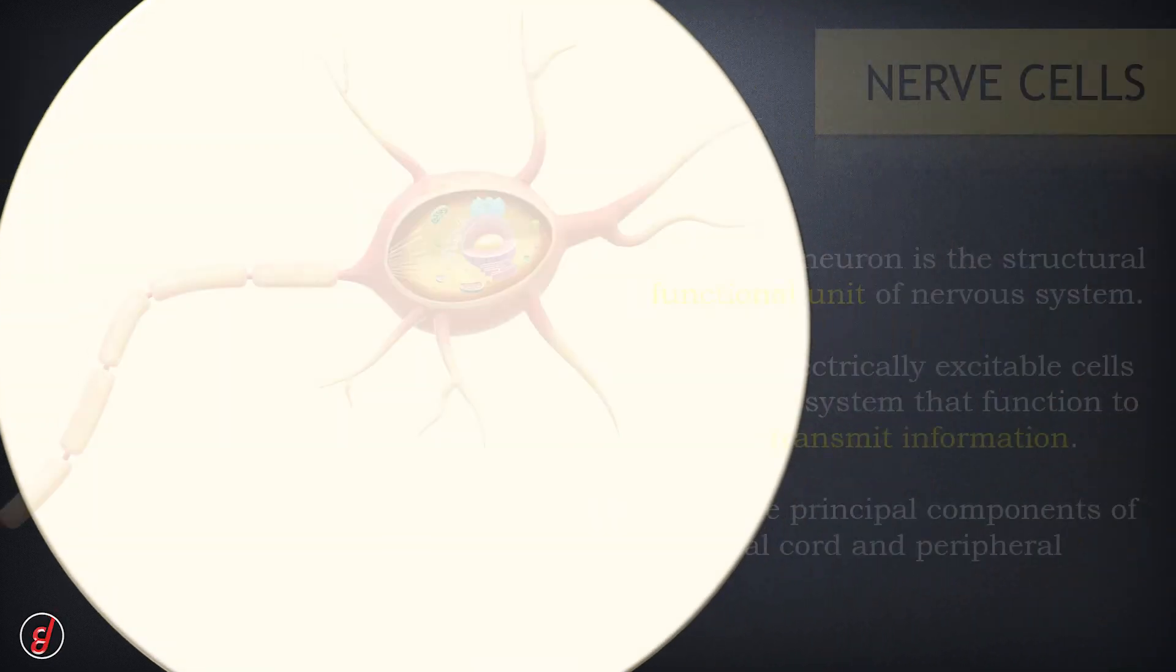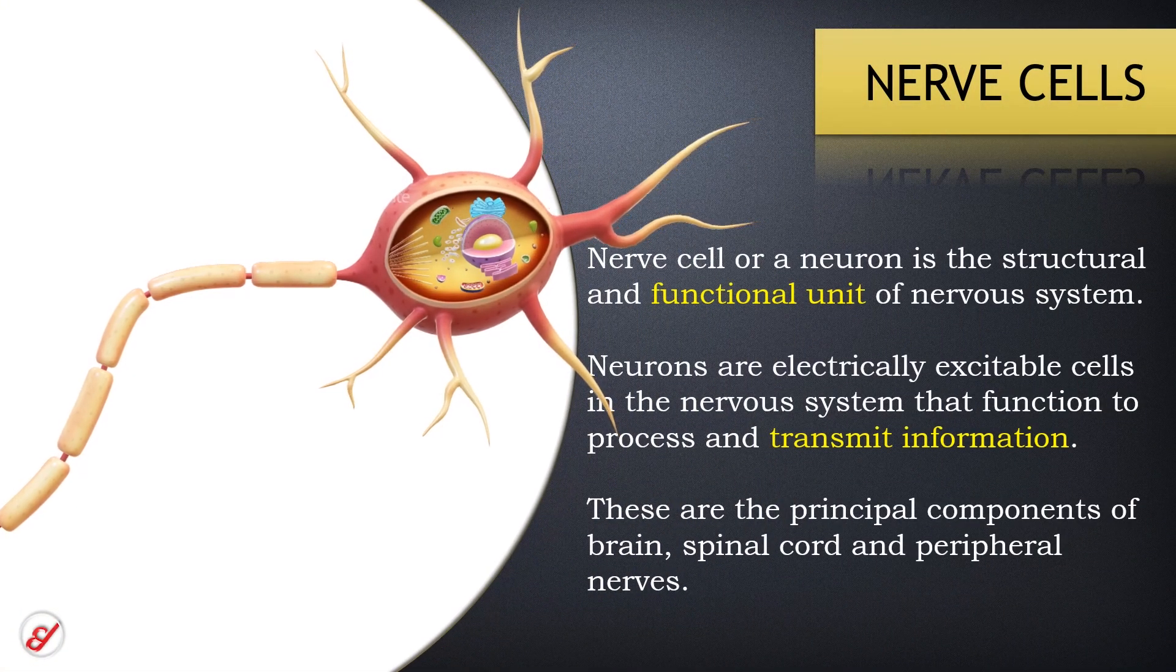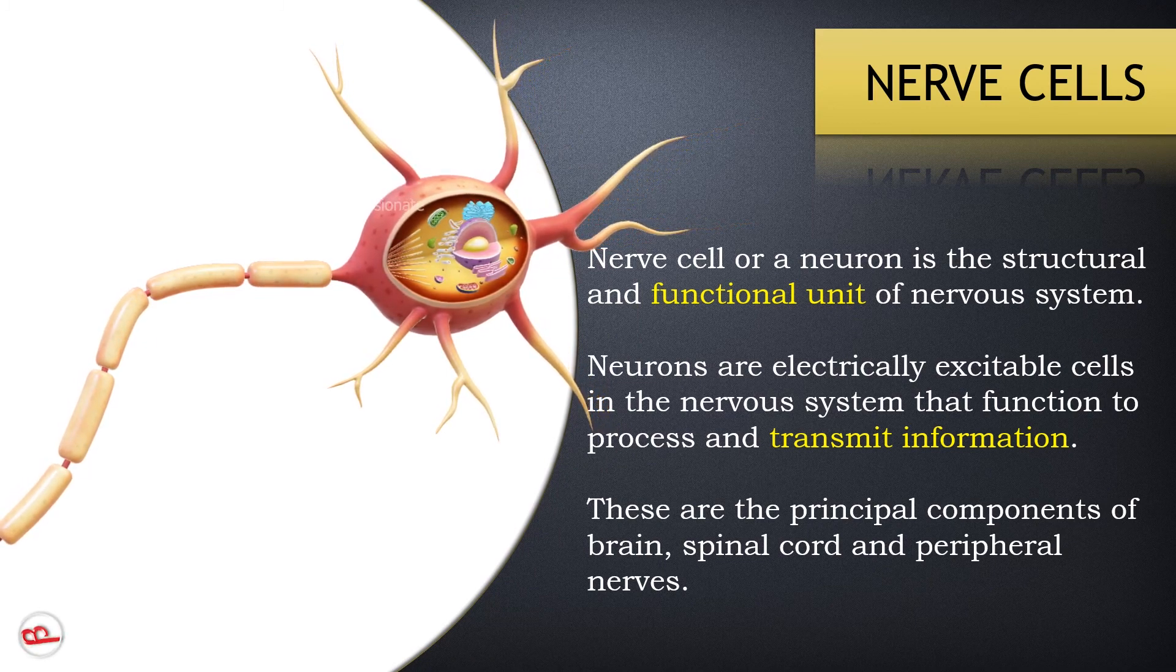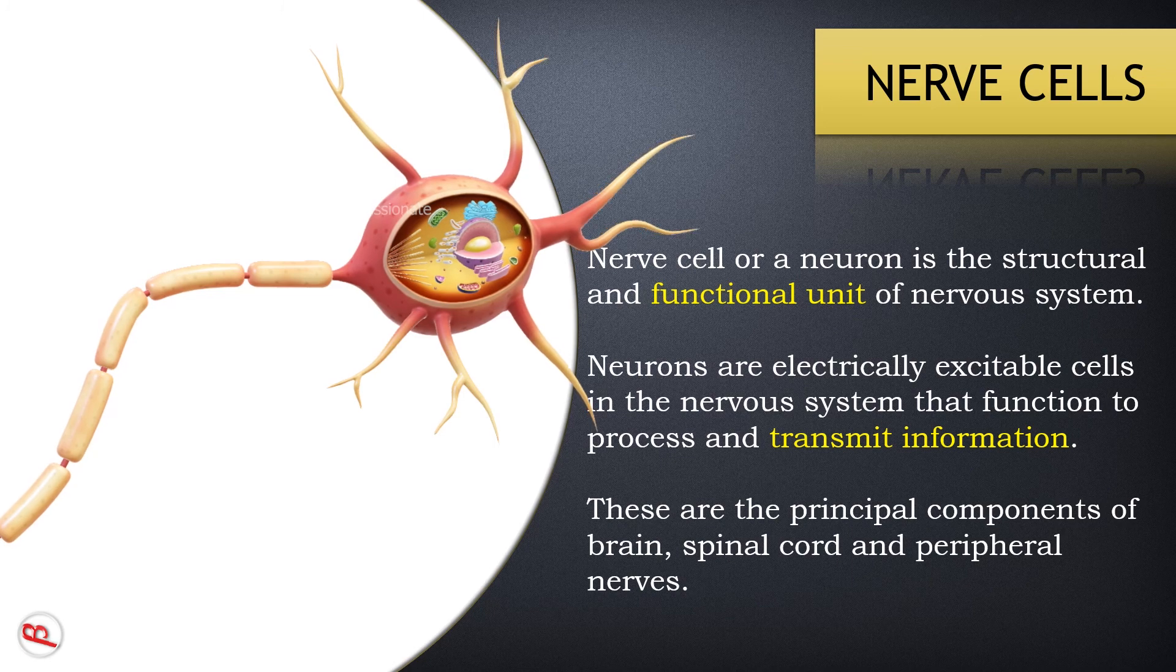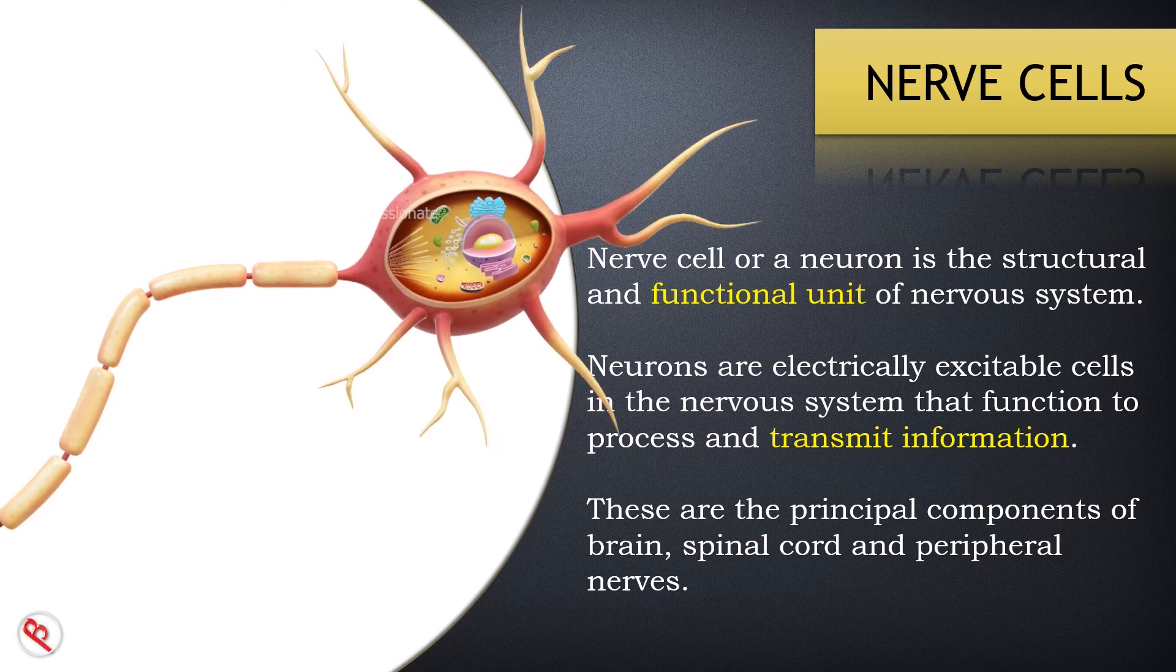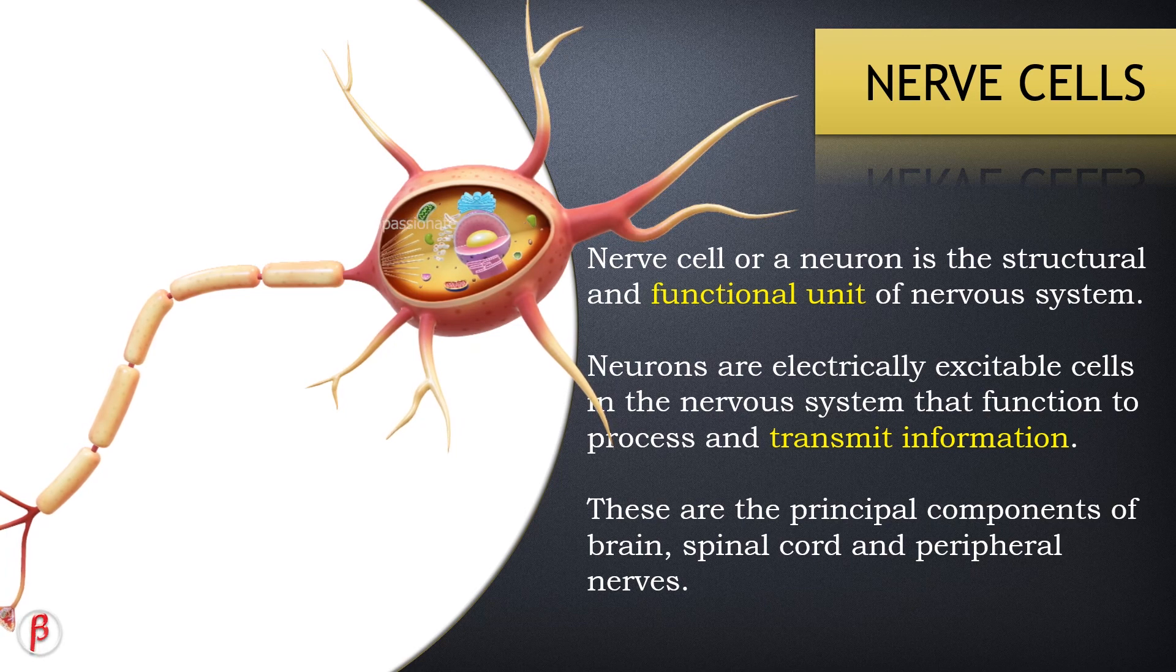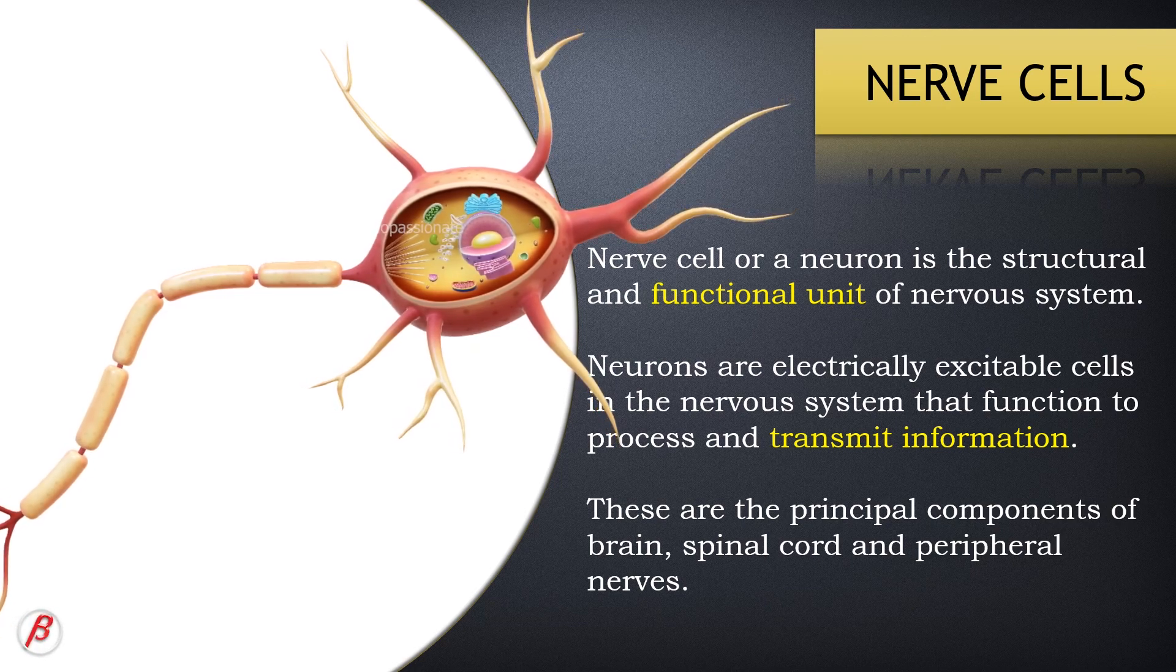Nerve cells, or neurons, are the structural and functional unit of the nervous system. Neurons are electrically excitable cells in the nervous system that function to process and transmit information. These are the principal components of the brain, spinal cord, and peripheral nervous system.